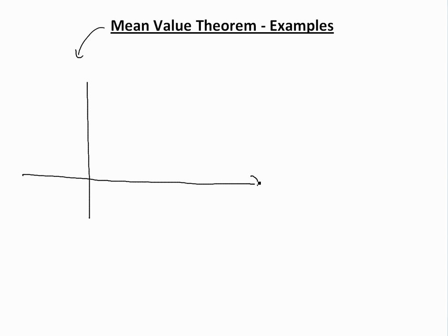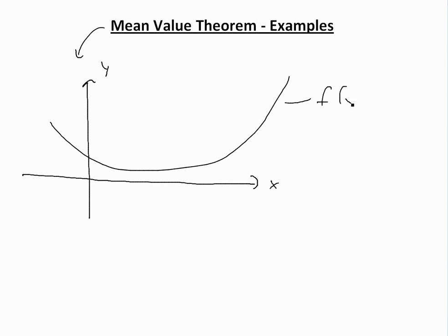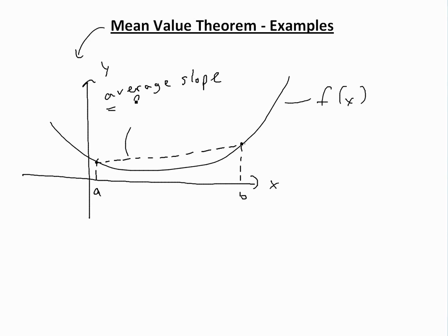If you have a function f(x) on an interval — let's say with endpoints a and b — and if it's differentiable and continuous between a and b, then the average slope here is just rise over run: f(b) minus f(a), over b minus a.